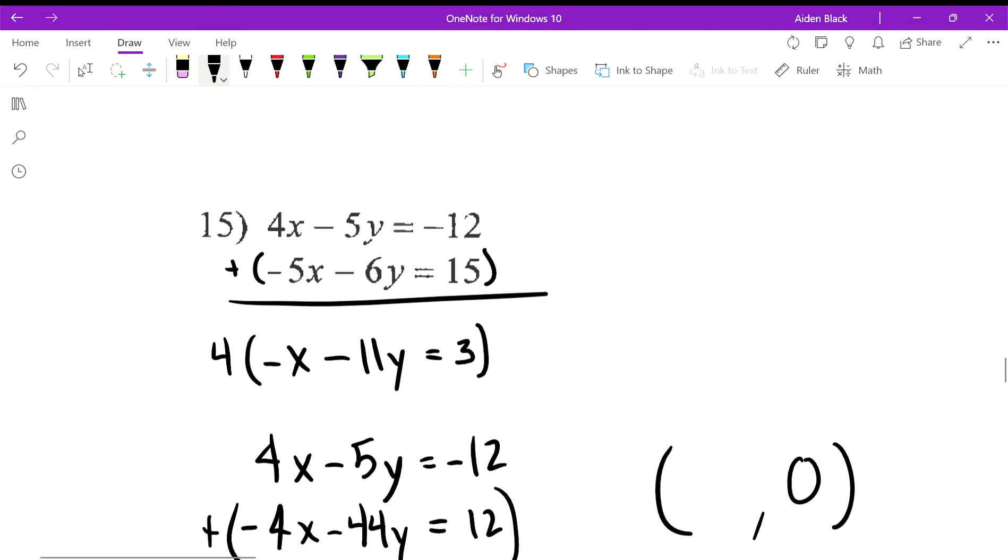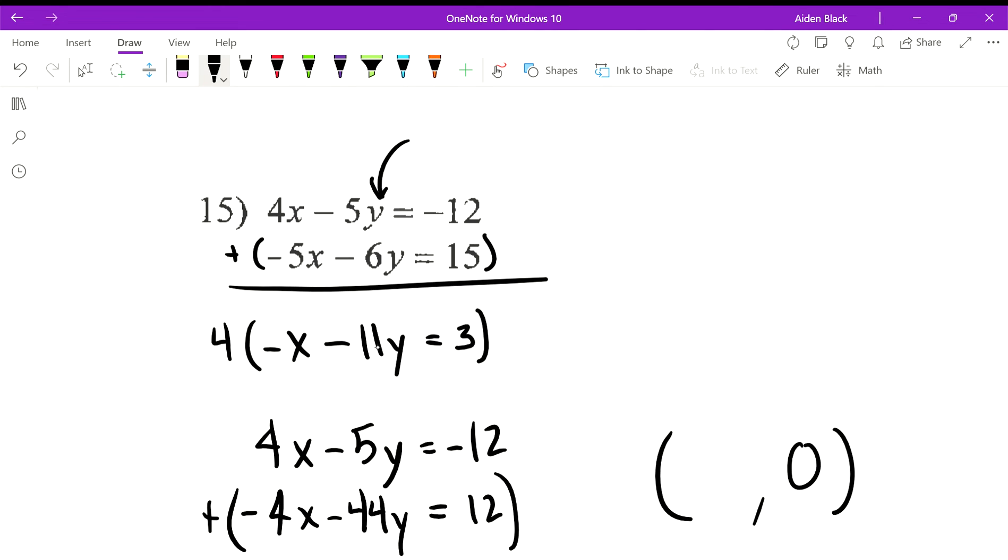So our solution, remember our y value is 0. Now I've got to find our x value. So if you plug in 0 for y, we'll just do it with the first equation: 4x minus 5 times 0 equals negative 12. This cancels because 5 times 0 is 0, and then we find that x must equal negative 3.